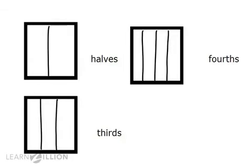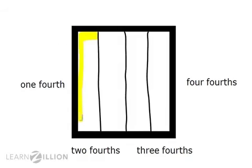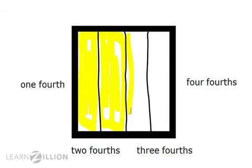Let's look more closely at this last shape. When you have a shape that is broken down into four equal parts, each of those parts is called a fourth. And we can count fourths just like we would count any other object, like this: one-fourth, two-fourths, three-fourths, and four-fourths.